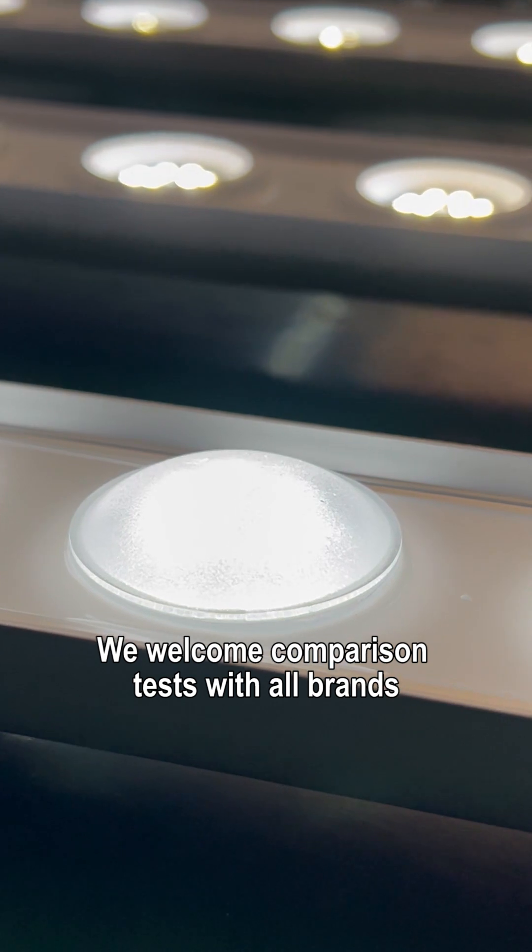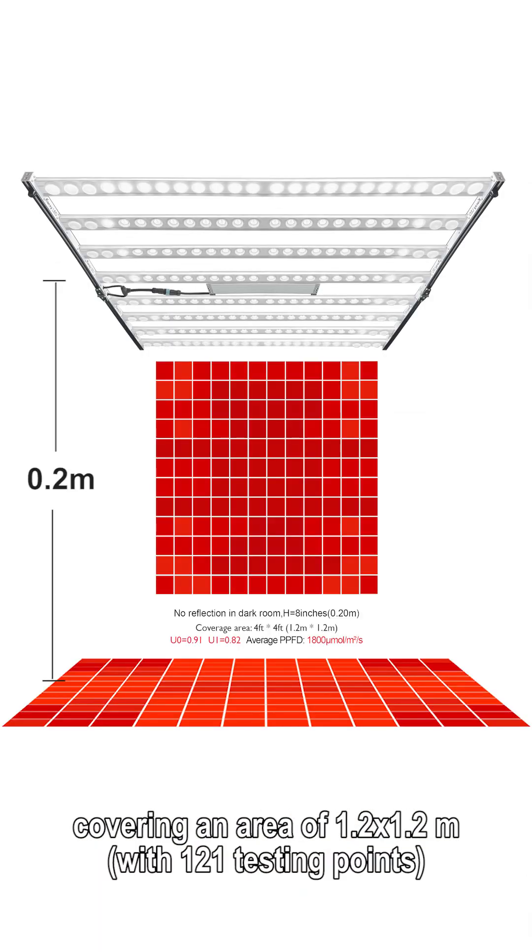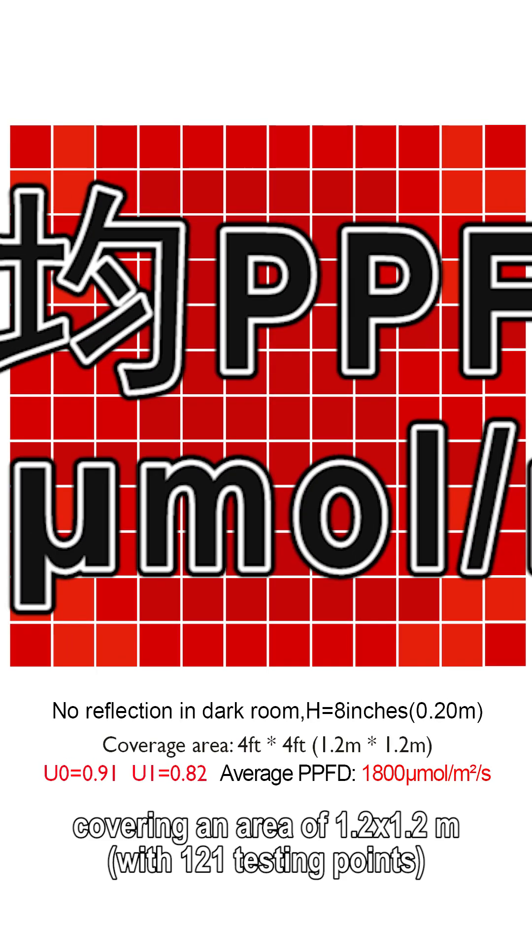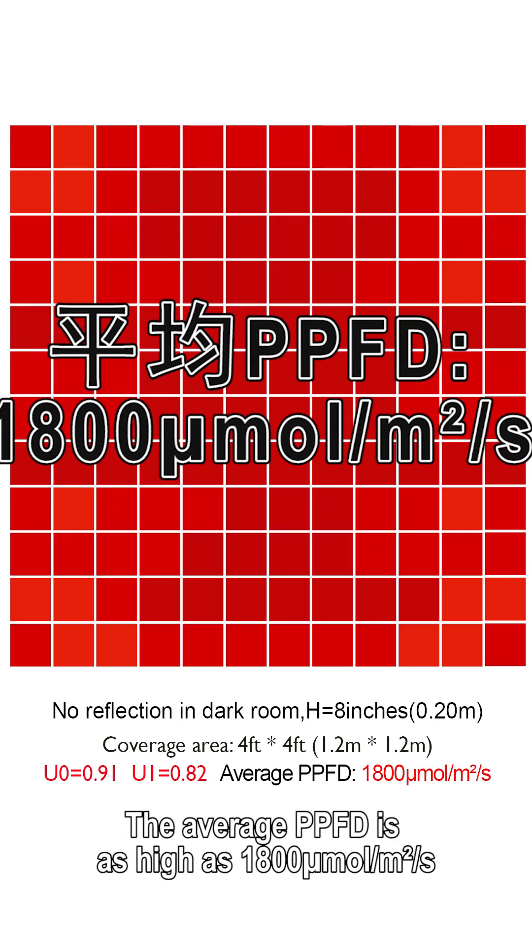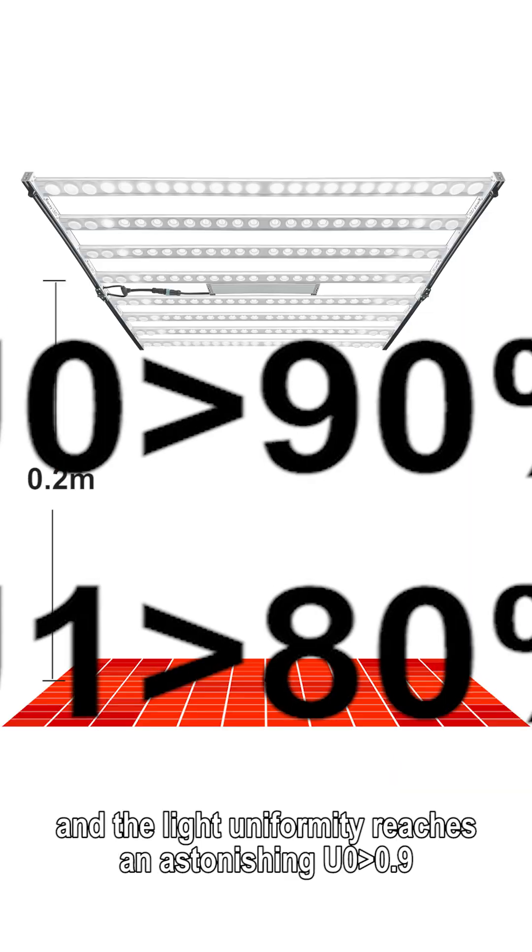We welcome comparison tests with all brands. The hanging height is 0.2 meters, covering an area of 1.2 by 1.2 meters. The average PPFD is as high as 1800 μmol/m²/s, and the light uniformity reaches an astonishing uniformity greater than 0.9.